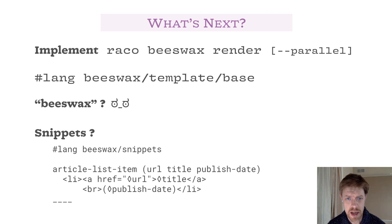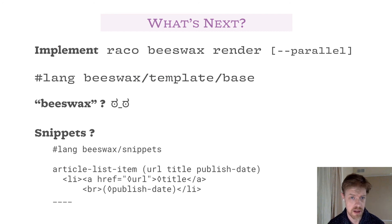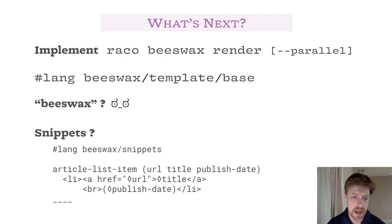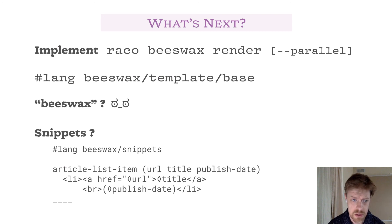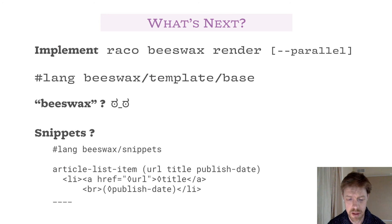Hashlang beeswax/template/base would be nice so that if people are using Beeswax with projects that don't want all the same Pollen affordances, they can avoid that overhead. Right now, a Beeswax template auto-requires three Pollen modules as well as a pollen.rkt file if it finds one. You may not need any of that functionality in your project. So a base template hashlang would avoid that for you. I'm not married to the name Beeswax — it's just the first pollen-adjacent word that occurred to me when I decided to write this thing, and so it could very well have a name change at some point in the future.